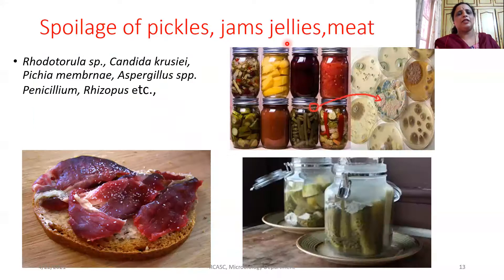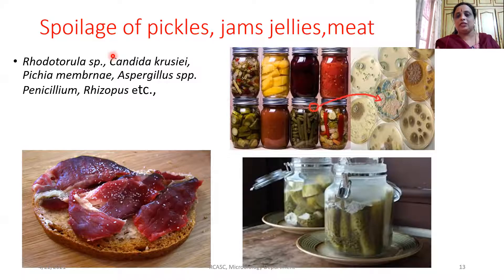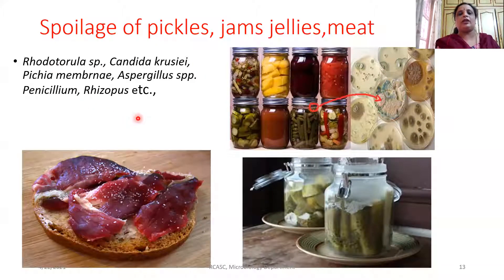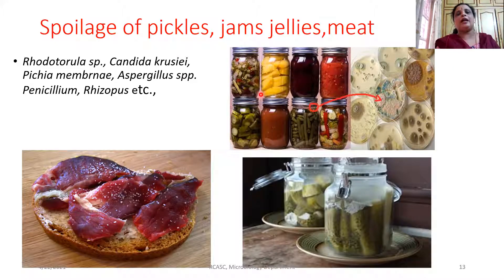If storage is not proper, the spoilage of pickles, jams, jellies, and meat can happen due to contamination with many yeast-like organisms like Rhodotorula, Candida species, Pichia species, Aspergillus species, Penicillium, and Rhizopus. This kind of contamination happens when storage is not properly done.